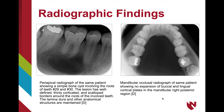Again, you can see the well-defined, thinly corticated lesion with characteristic scalloping around the roots, all while the lamina dura and other anatomical structures are maintained. The last image of the case is a mandibular occlusal radiograph that shows no expansion of the buccal and lingual cortical plates in the mandibular right posterior region.